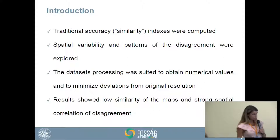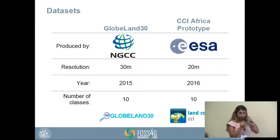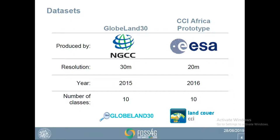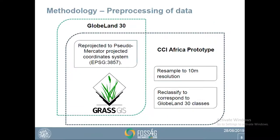The two datasets we used are GlobeLand30 and CCI Africa prototype. GlobeLand30 is produced by the National Geomatics Center of China; it has 30-meter resolution from Landsat imagery from 2015, and it has 10 land cover classes. CCI Africa prototype is a product of the Climate Change Initiative of the European Space Agency; it has 20-meter resolution, is for year 2016, and also has 10 land cover classes.